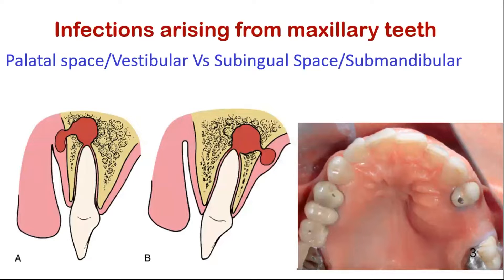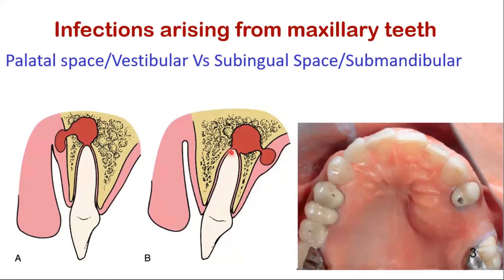The maxilla is different from the mandible, unlike the mandible that is U-shaped. The bony palate forces infections arising from the palatal cusp of the maxillary teeth into the palatal space. This space is formed by the bone of the palate and the overlying periosteum, and is often a drainage point for infections arising from the apices of the palatal roots of the maxillary teeth.